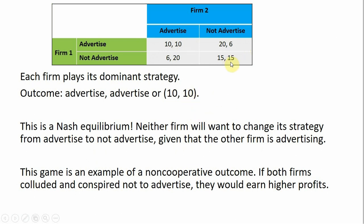I should also point out that 15, 15 is not a Nash equilibrium. It doesn't satisfy the definition that neither player would want to change their strategy given the choice of the other player. If we ask firm one: you're currently not advertising and firm two's currently not advertising — would you like to change your strategy? Firm one would say yes. If they switch from not advertising to advertising, firm one's profits would go from 15 to 20. So although the 15, 15 outcome is appealing, it is technically not the Nash equilibrium. The Nash equilibrium is found by each player playing their dominant strategy.